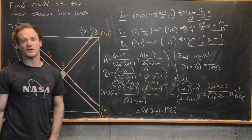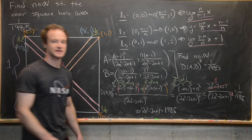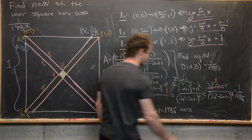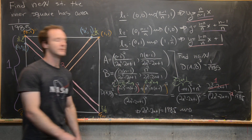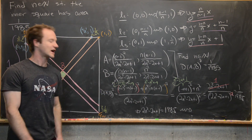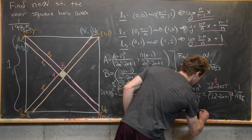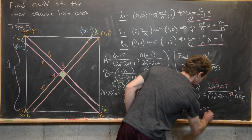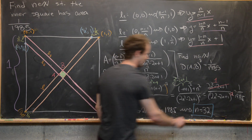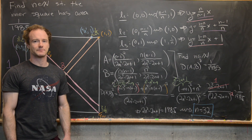This is a fairly routine quadratic equation. It has two integer roots, but only one positive root. Working through the details gives n = 32, and that's the final answer.